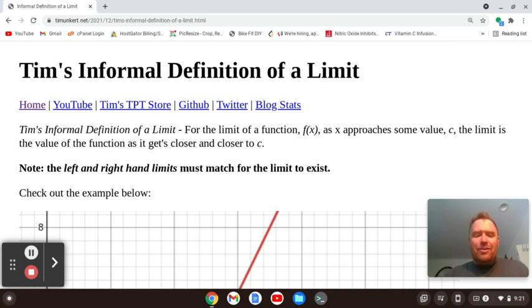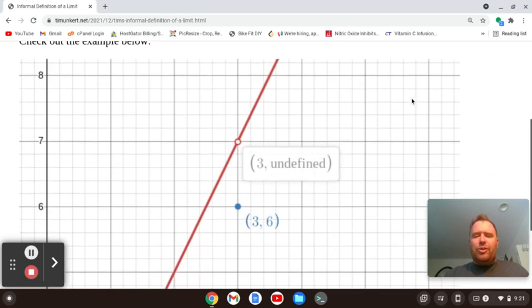Now, for the limit to exist, we want to note that the left and right-hand limits must match. It must be approaching the same value from the left and the right-hand sides. So I've created this picture using Desmos.